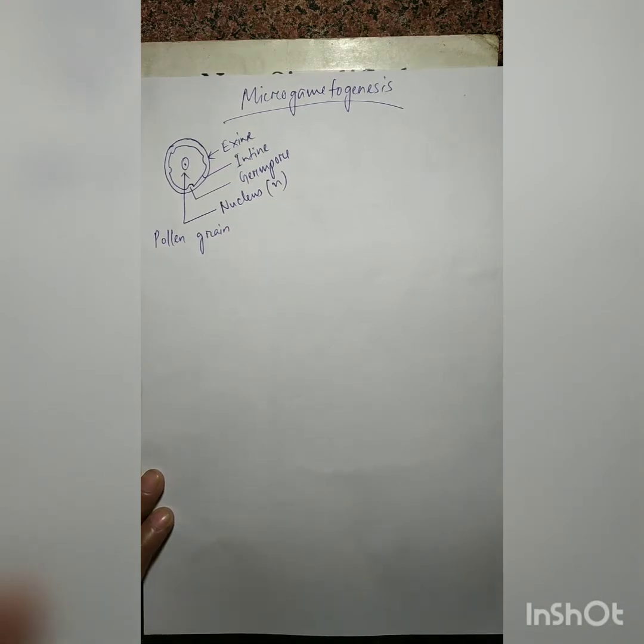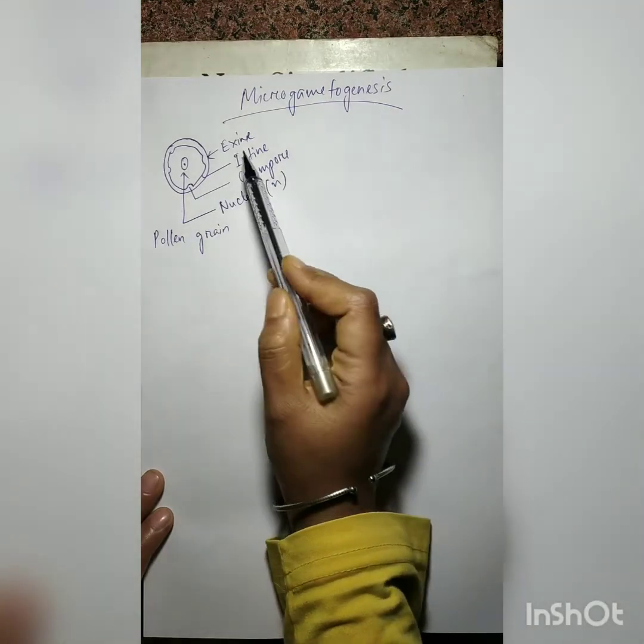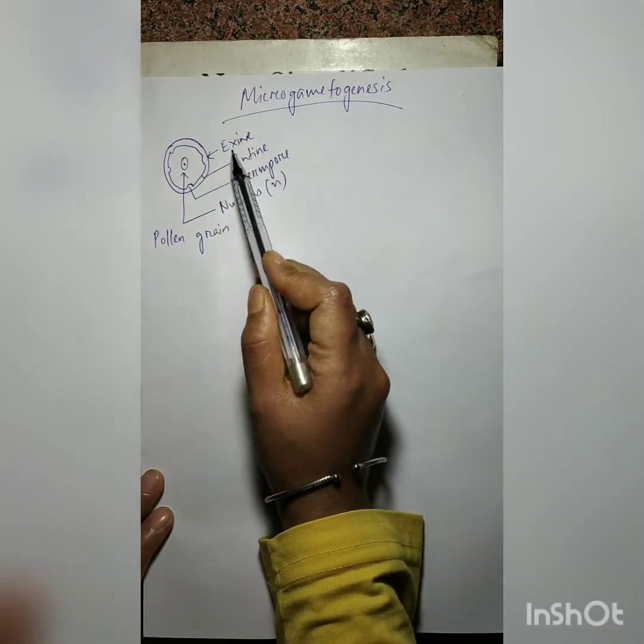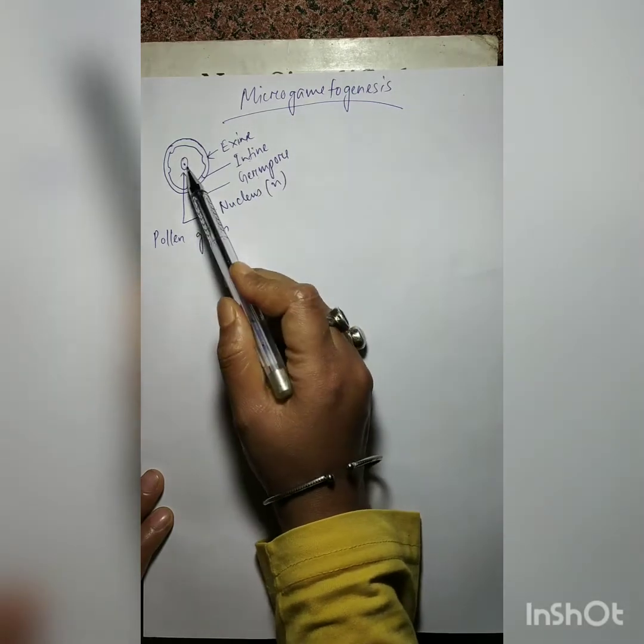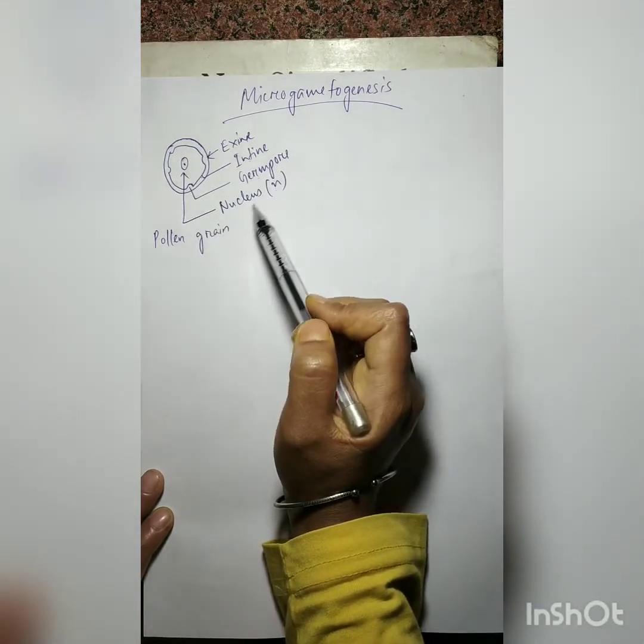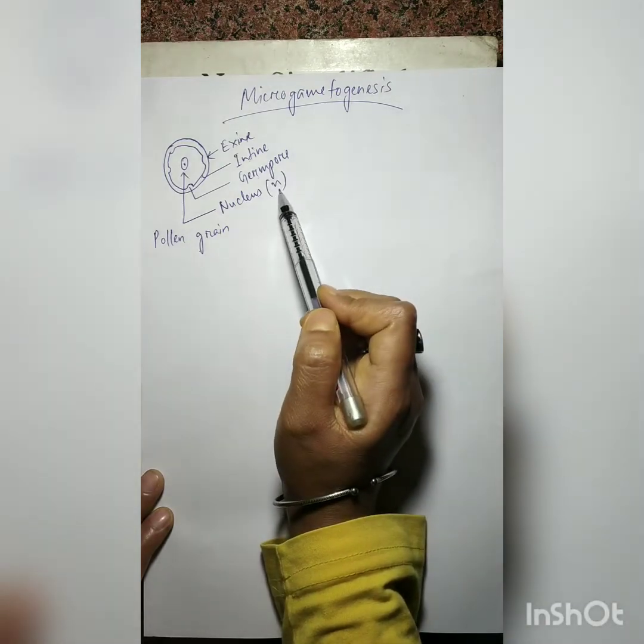Before starting with the process, this is your typical pollen grain. This is the exine, the outer layer. The inner layer is your intine, the pore that is your germ pore and the nucleus. And we know that the nucleus present inside the pollen grain is your haploid.